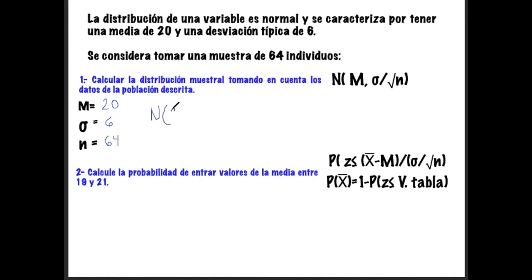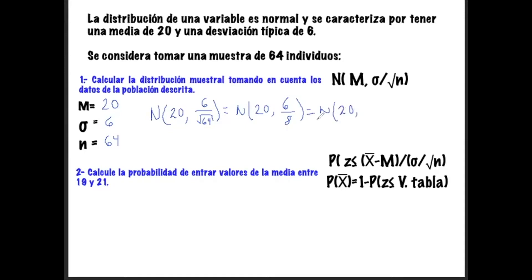Esta distribución muestral se caracteriza por ser una población con media de 20, desviación estándar de 6 y tamaño de muestra de 64. Sustituyendo: la media es 20, y 6 dividido entre la raíz de 64, que es 8, nos da 0.75. Así se caracteriza nuestra distribución muestral con estos valores.